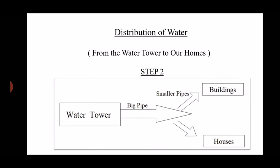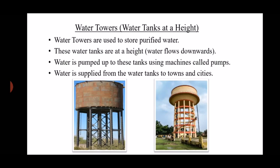Step two: from the water tower to our houses. The collected purified water is sent through big and small pipes into buildings and houses. Water towers are used to store purified water. These water tanks are at a height, so water flows downwards. Water is pumped up to these tanks using machines called pumps. Water is then supplied from the water tanks to towns and cities.